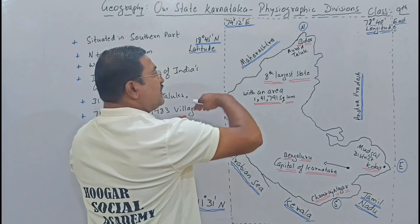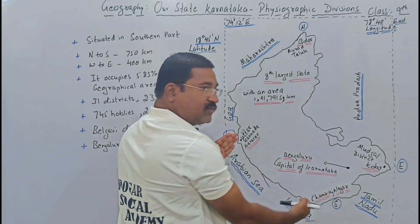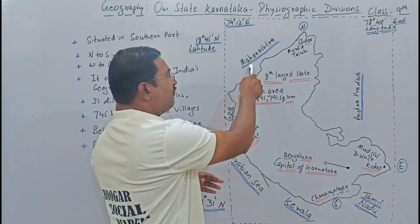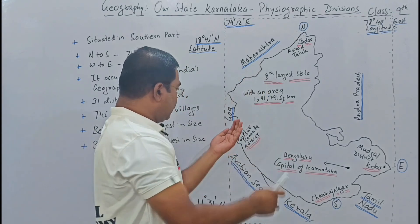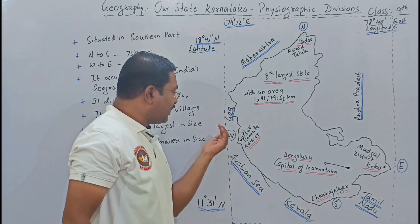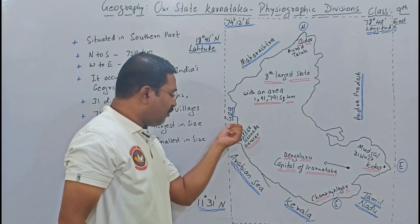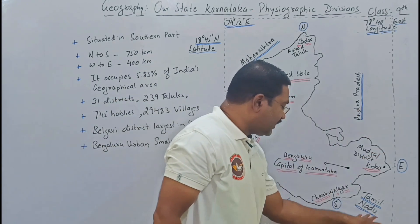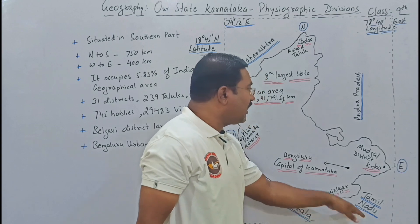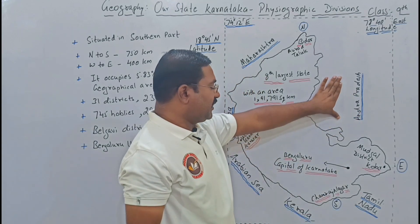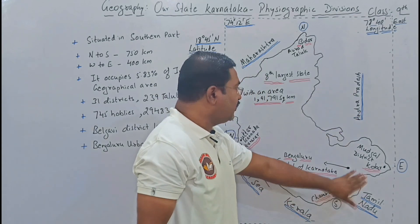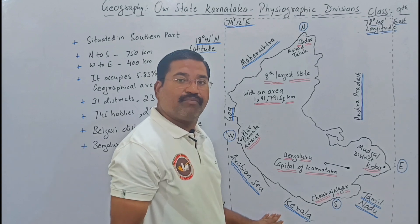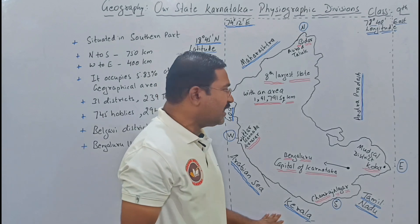Karnataka has several neighboring states. Towards the upper side is Maharashtra. Towards the western part is Goa. In the southern part is Kerala, next to it is Tamil Nadu, and towards the east is Andhra Pradesh. So there are five neighboring states in total.